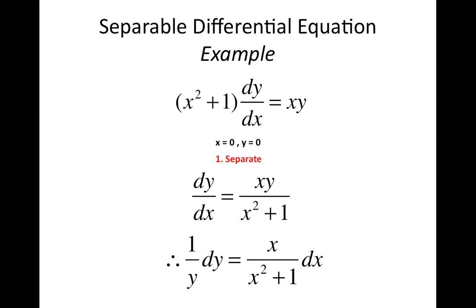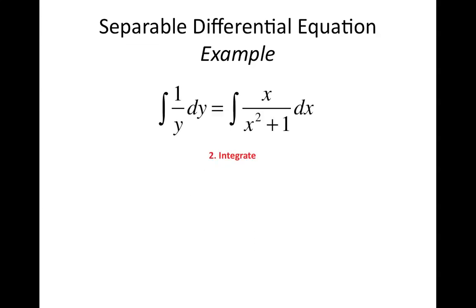If you divide that y over from the right hand side and multiply the dx from the left hand side up on each side, the y's cancel on the right hand side and leaves 1 over y dy equal to x over x squared plus 1 dx. That's your separate step all done.